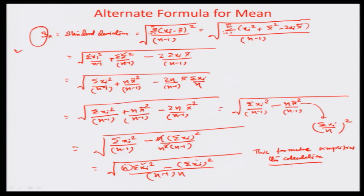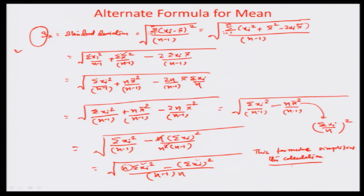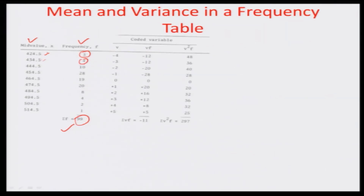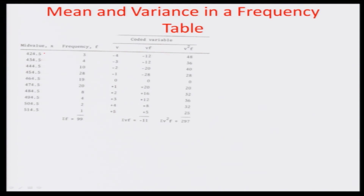In any kind of frequency table, it is important that you should be able to pull out a variable which is useful and easily used for calculations. For example, a frequency table with several different mid-values of the interval x and an associated frequency. The mid-value 424.5 occurs 3 times, 434.5 occurs 4 times, 444.5 occurs 10 times, and so on. Playing with these different values is quite cumbersome. Can we simplify them so that a simplified form can emerge as the basis for calculating our distribution?